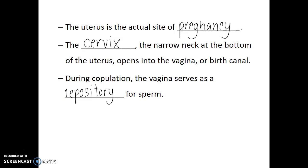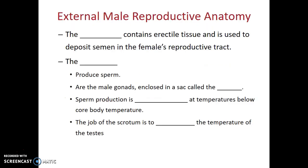Now we'll look at the anatomical structures of the male reproductive system. There are internal and external components of the male reproductive anatomy. Among those external components is the penis, which contains erectile tissue and is used to deposit semen into the female's reproductive tract. Also the testes, which are the male gonads — they produce the male gamete or sperm, and also produce the male sex hormones including testosterone along with other androgens. The male gonads are external structures contained within a sac of muscle and skin known as the scrotum.